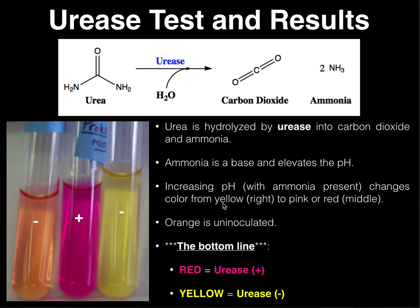Here is the bottom line: if you have a reddish pink — anywhere in the reddish pink spectrum — then it's going to be urease positive. Over here on the left and right we've got yellow and orange, and both of those are considered negative. When un-inoculated, sometimes it'll actually turn yellow, but either yellow or orange would be negative. The key is that only if it's pink or pinkish red is it urease positive. If it's orange or yellow, those are not pink, so anything in that range is urease negative.